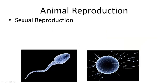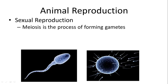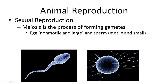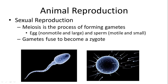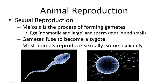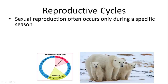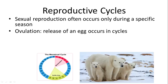Now we'll shift to animal reproduction, starting with sexual reproduction. Meiosis is the process of forming gametes — the egg is generally large and non-motile, and sperm is generally small. Gametes fuse to make a diploid organism, the zygote. Most animals reproduce sexually, some asexually, and some both. Sexual reproduction often occurs only during a specific season — the mating season — especially in organisms living in seasonal environments.